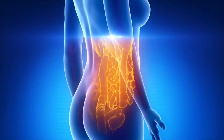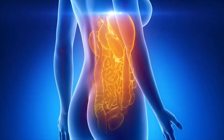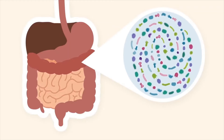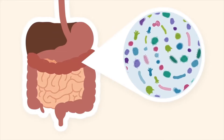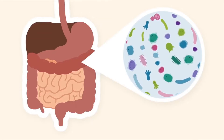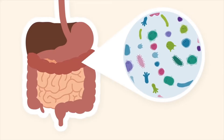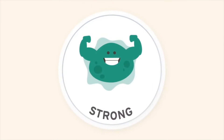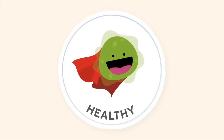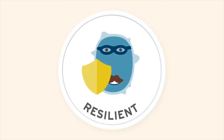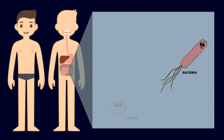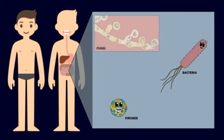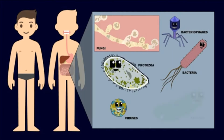FMTs are used to treat imbalances in our microbiome. The human microbiome is composed of trillions of tiny microbes, which are mostly bacteria, that thrive inside our gut. The vast majority of these bacteria are not harmful, as many are essential to our health, keeping us strong, healthy, and resilient. When these bacteria become unbalanced, a person can develop diarrhea and other intestinal problems. For this reason, the microbiome is a hugely impactful part of human health.